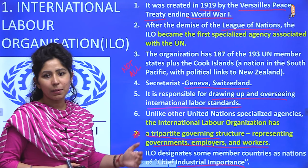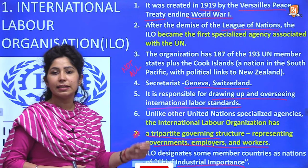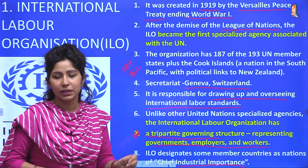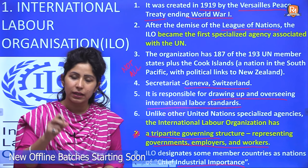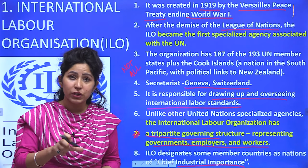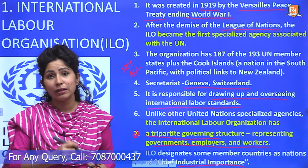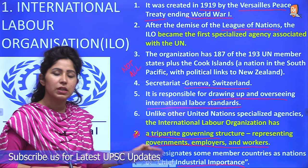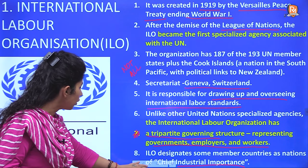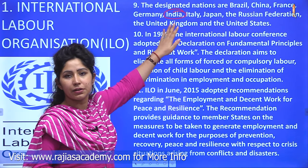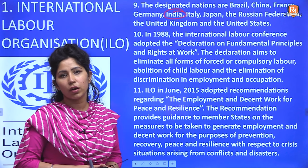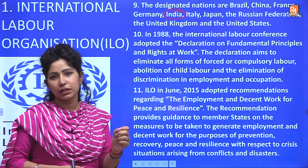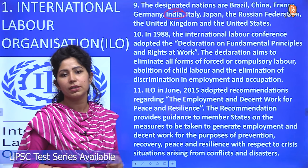Another important point about ILO is that it designates some member countries as countries of chief industrial importance — wherever industrialization is high and ILO needs to work to protect workers' rights and labour rights. China is a part of that list, and India, most importantly, is also designated as a country of chief industrial importance according to ILO.